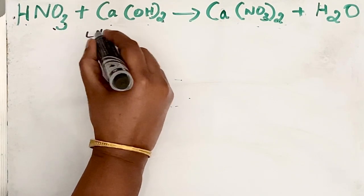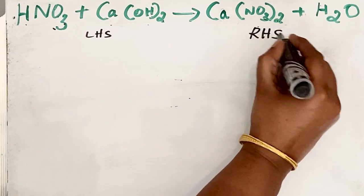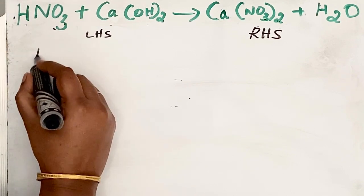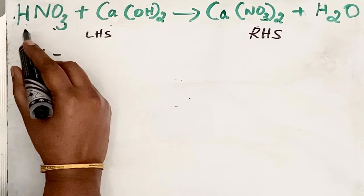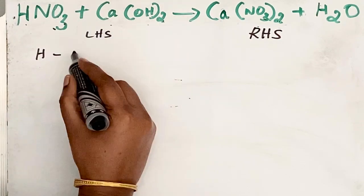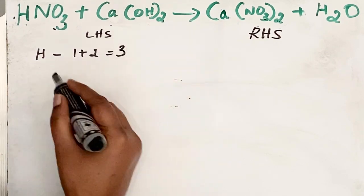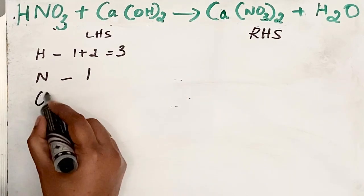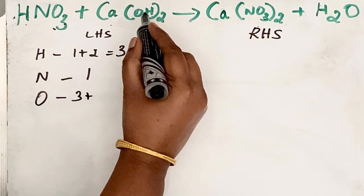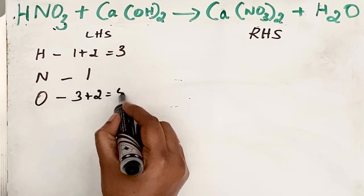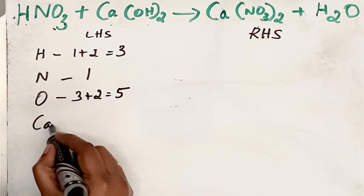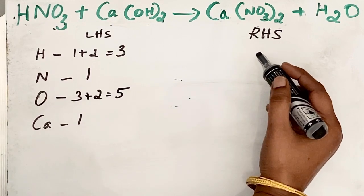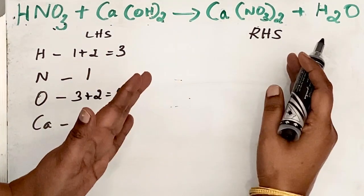This side is the left-hand side and this is the right-hand side. Let us write the elements on the left-hand side. First, hydrogen: there are two hydrogen atoms here, so one plus two gives three hydrogen atoms. Next, nitrogen: only one. Next, oxygen: three here but two oxygen atoms there, so three plus two gives five oxygen atoms. Next, calcium: only one.